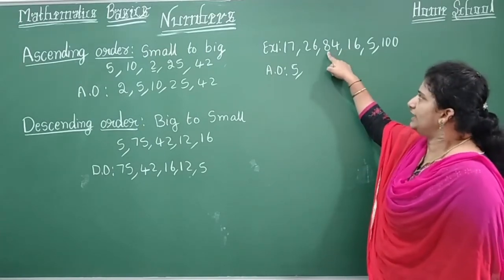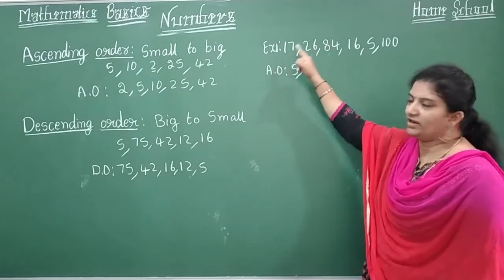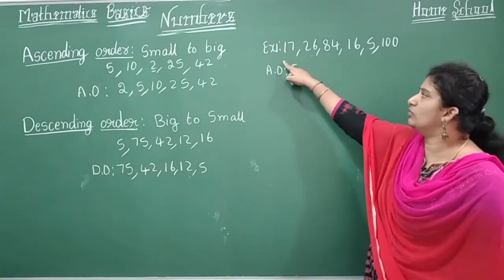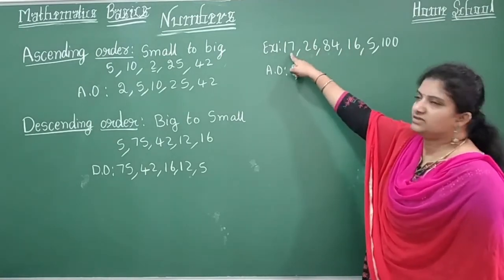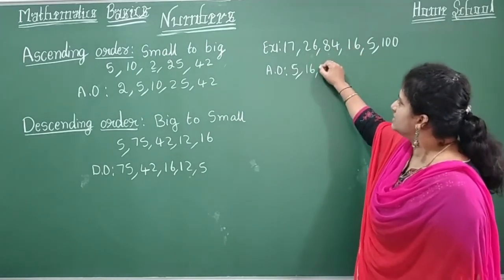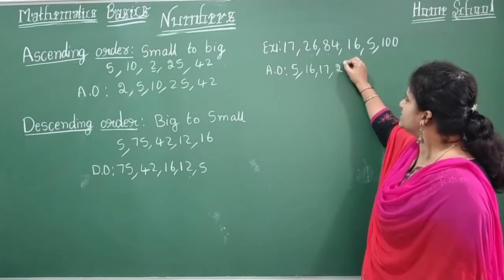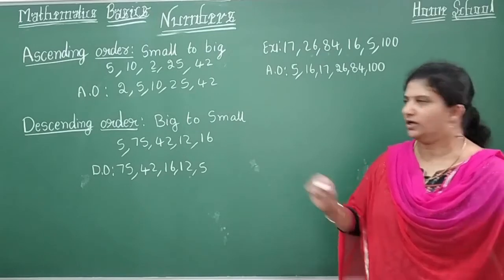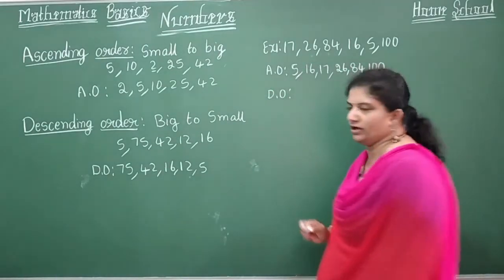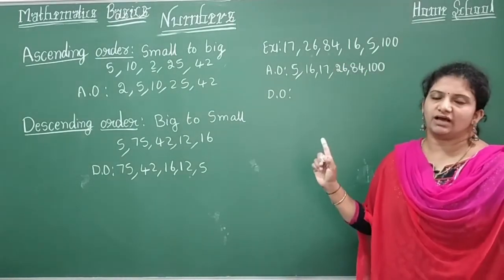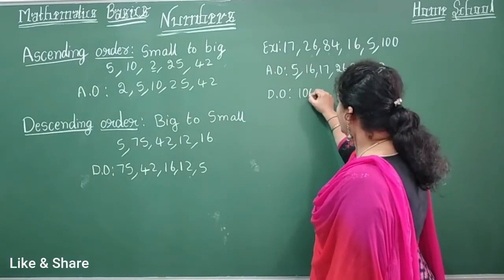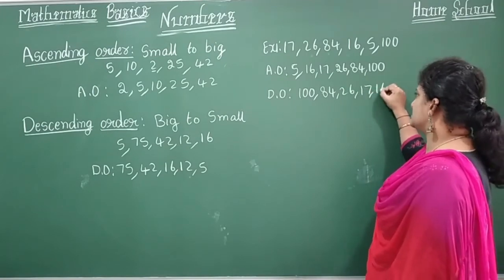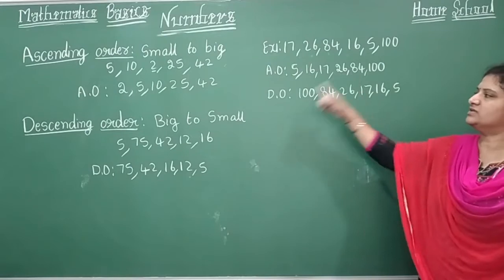Next come the two-digit numbers. Look at the highest place value. 17 and 16 both start with 1, which is smaller than 2 or 8. Since 1 and 1 are the same, compare the next digit: 6 is smaller than 7, so 16 comes before 17. So ascending order is: 5, 16, 17, 26, 84, then the three-digit number 100. For descending order, it reverses: 100, 84, 26, 17, 16, 5.